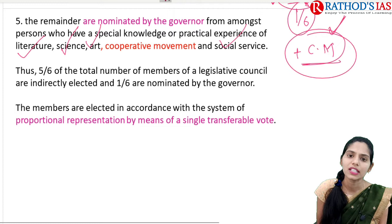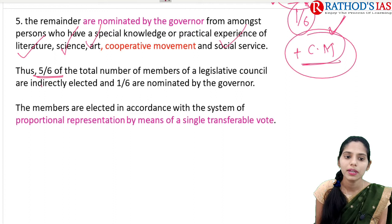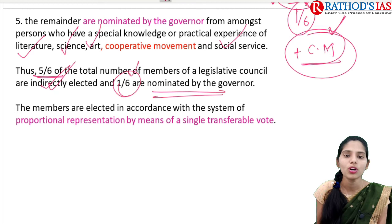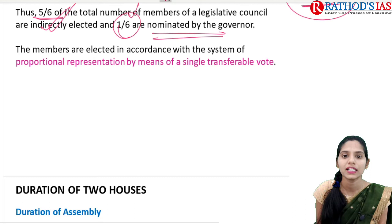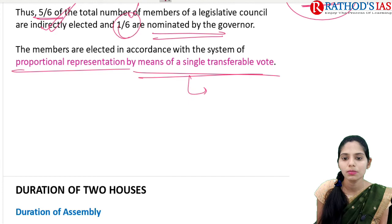In this way, five-sixths of the total members of the Legislative Council are indirectly elected, and the remaining one-sixth are nominated by the Governor who have special knowledge. These members are mainly elected by proportional representation by means of the single transferable vote, similar to that of the Rajya Sabha.